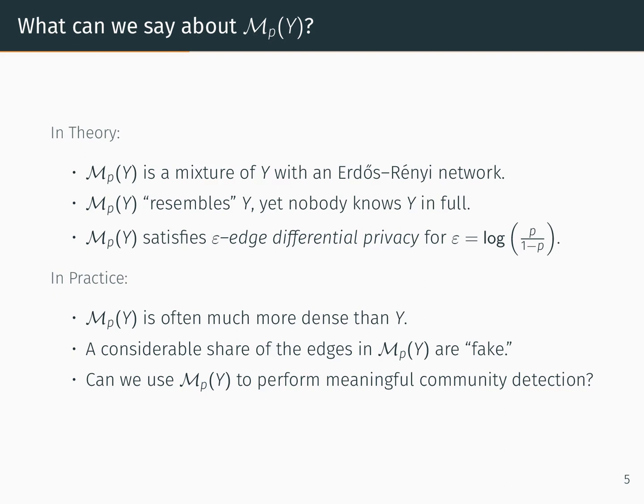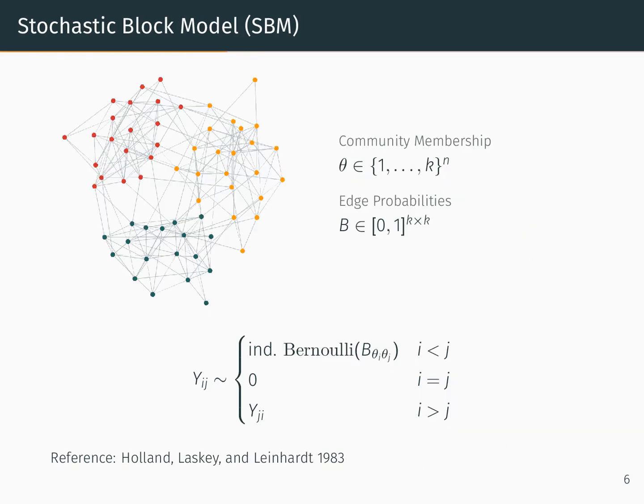In order to address that question theoretically, we're going to use a concrete setting of these block models. The first one is the stochastic block model. In the stochastic block model we have n nodes and k communities, and we have two parameters. The first is theta, which is a vector that assigns each node to one of the k communities. The second parameter is this k by k matrix of probabilities, B. Each edge in the stochastic block model occurs as an independent Bernoulli random variable, where the probabilities are taken from that matrix B based on the blocks to which the nodes belong.